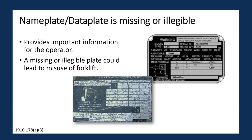Not having access to this data plate — either it being missing or illegible — would essentially not allow operators access to that important information. The operators would have to essentially be guessing what the capabilities are for the forklift attachments and for the forklift itself. This can lead to the operator actually overloading the forklift or the attachment, which can eventually lead to a tip over.